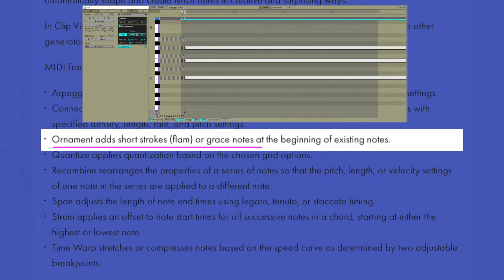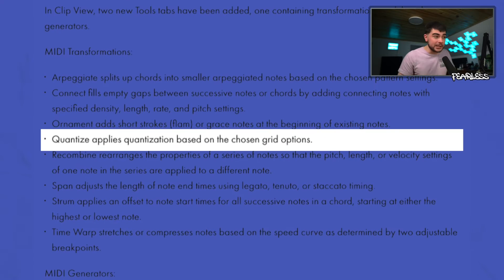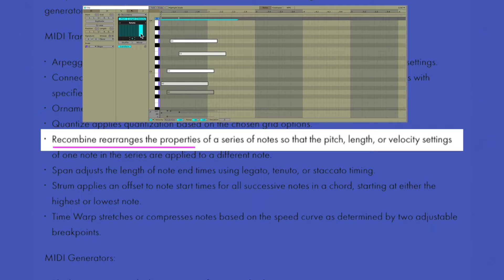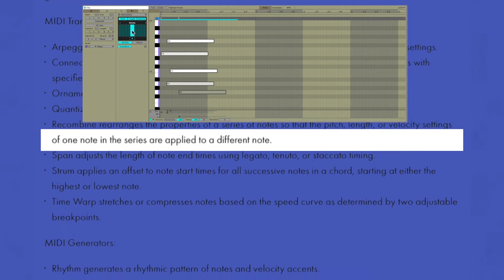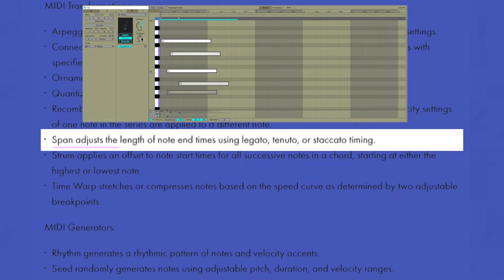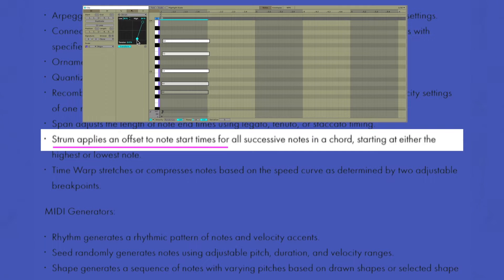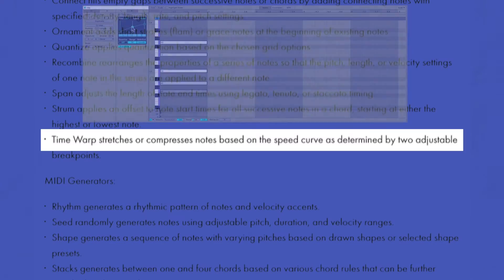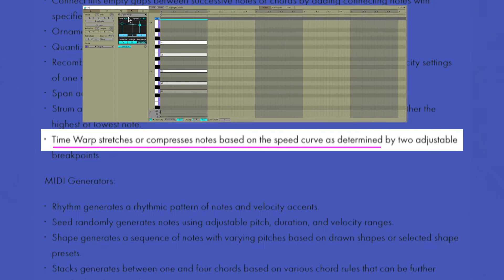Here's what each transformation tool does: Arpeggiate splits chords into arpeggiated notes based on a chosen pattern. Connect fills empty gaps between successive notes or chords with connecting notes. Ornament adds short grace notes or flams at the beginning of existing notes. Quantize does exactly what you'd expect. Recombine rearranges properties of a series of notes so pitch, length, or velocity from one note is applied to another. Span adjusts note end times using legato, tenuto, or staccato timing. Strum applies an offset to note start times for all successive notes in a chord. Time warp stretches or compresses notes based on a speed curve with two adjustable breakpoints.